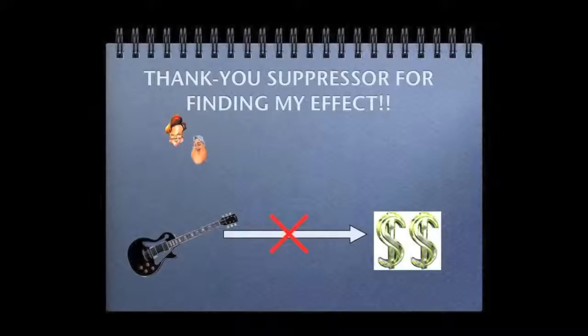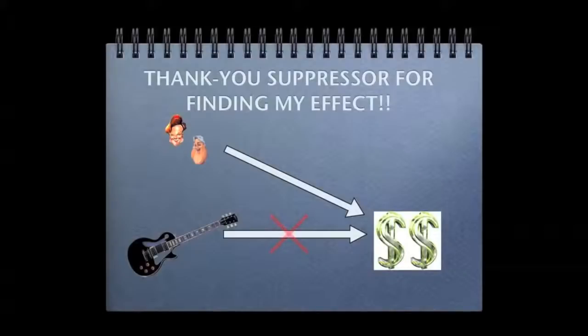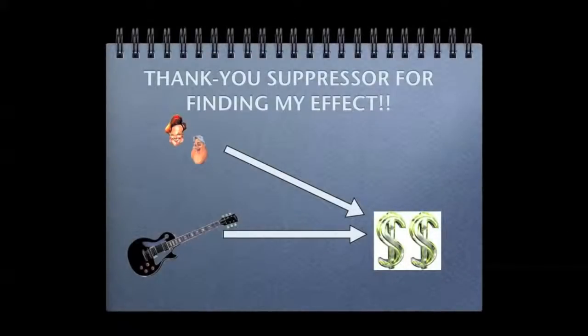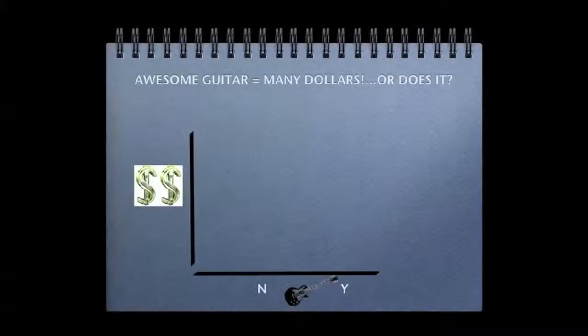However, when you controlled for differences in talk show host preference, you see that the correlation between the guitar and the contract reappears. Let's try to clarify this a little more. So as we said before, we have two groups: those that did not in the no column and those that did receive a Les Paul in the yes column. We also have on the y-axis their likelihood to receive a record contract.